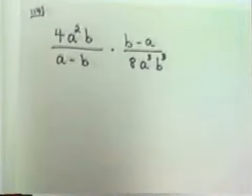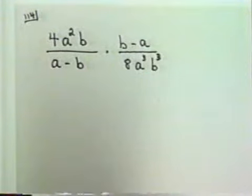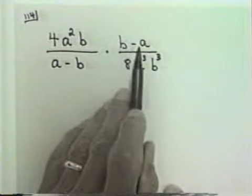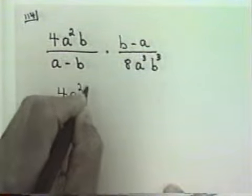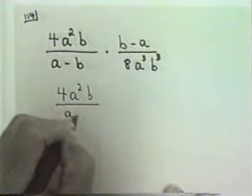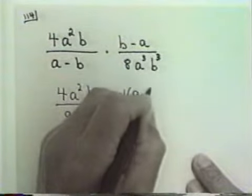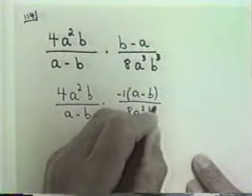Let's look at another example: 4a squared b divided by a minus b, times b minus a divided by 8a cubed b cubed. Now, I have the a minus b and the b minus a. So I can write this as 4a squared b over a minus b, times negative 1 times a minus b, over 8a cubed b cubed.